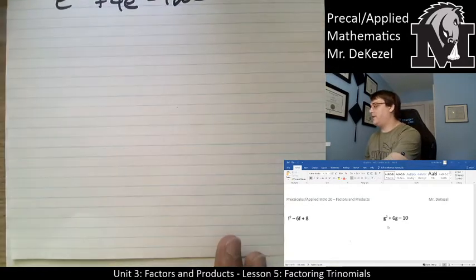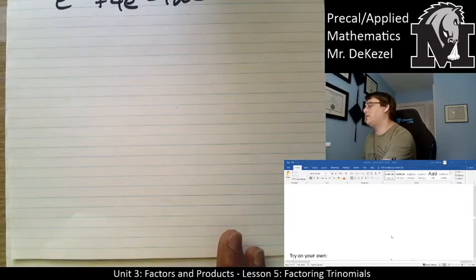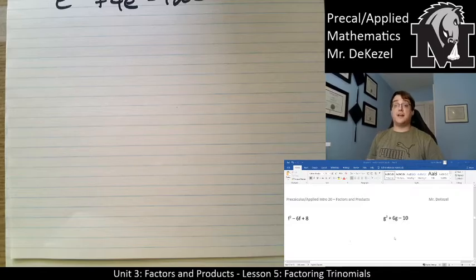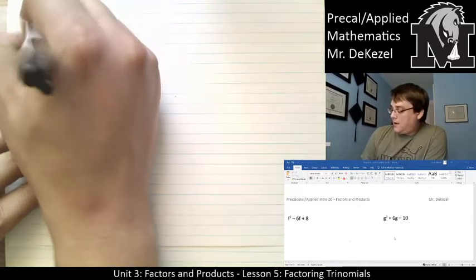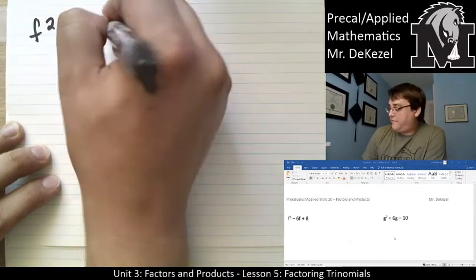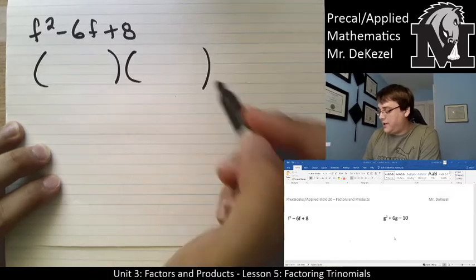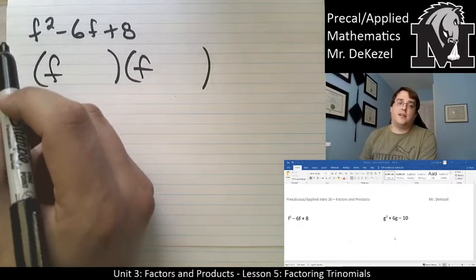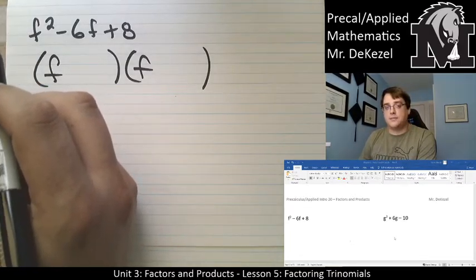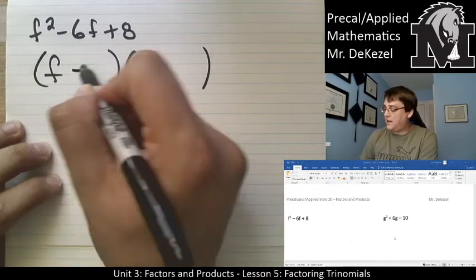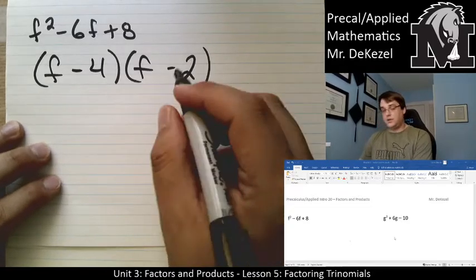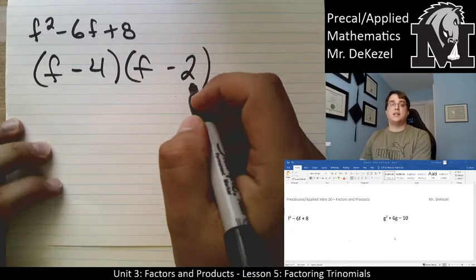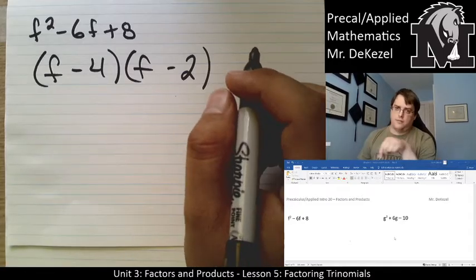Let's do a couple more. f squared minus 6f plus 8. Greatest common factor is 1, so jump right into our brackets. f times f gives the first part. What two numbers multiply to positive 8 and add to negative 6? I'm thinking negative 4 and negative 2: negative 4 times negative 2 is 8, and negative 4 plus negative 2 is negative 6. So the answer is (f - 4)(f - 2). If it's wrong, put it in the comments.